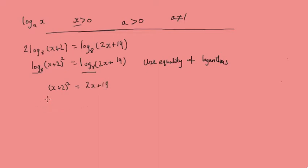So now we just have a normal quadratic equation. So we'll expand this bracket and we'll get x squared plus 4x plus 4 equal to 2x plus 19. And now we'll bring it all over and we'll get x squared plus 2x minus 15 equals 0. We'll factorize this and we'll get x minus 3 times x plus 5 equals 0. So x must be 3 and x equals minus 5.